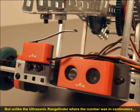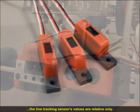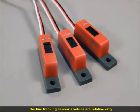But unlike the ultrasonic rangefinder, where the number was in centimeters, the line tracking sensor values are relative only and do not correspond to any set system of units.